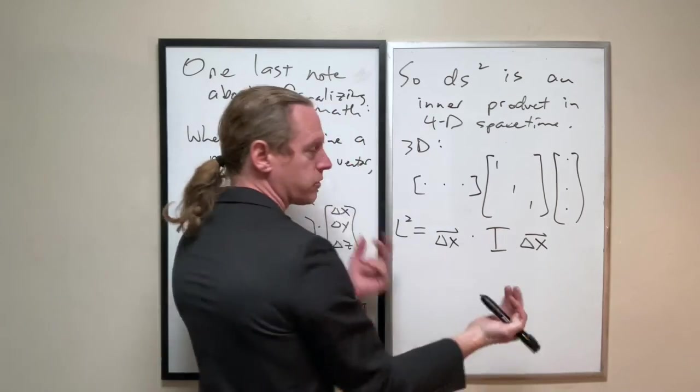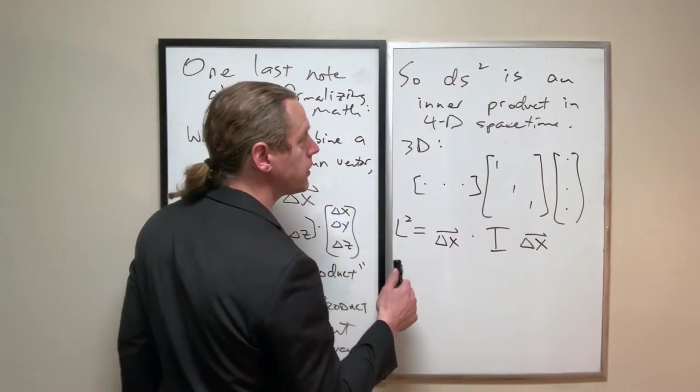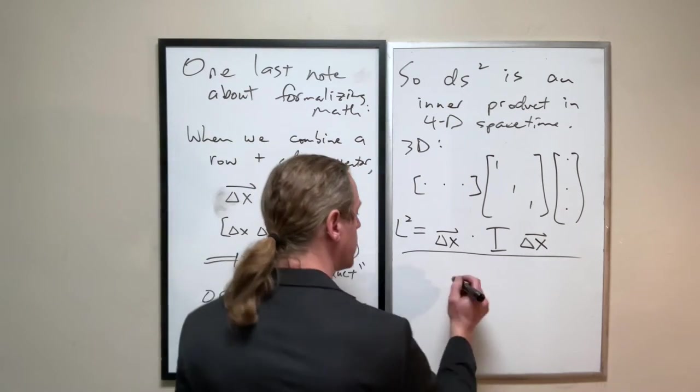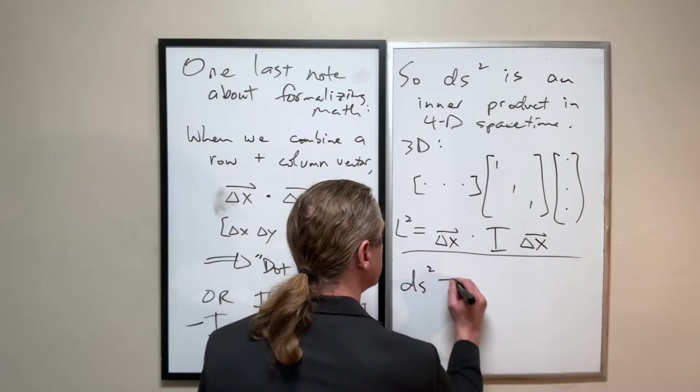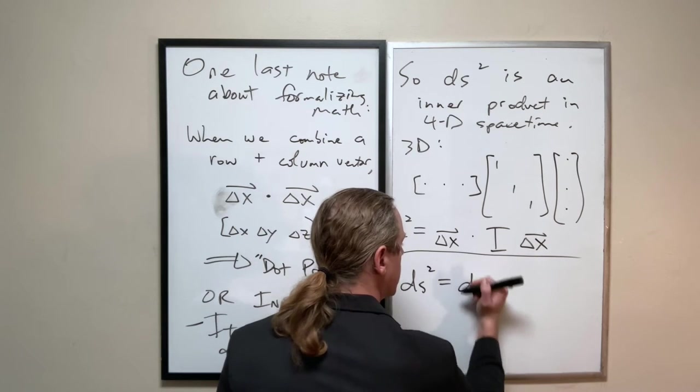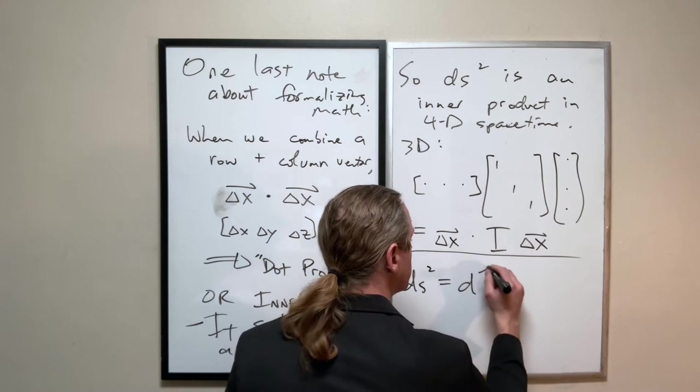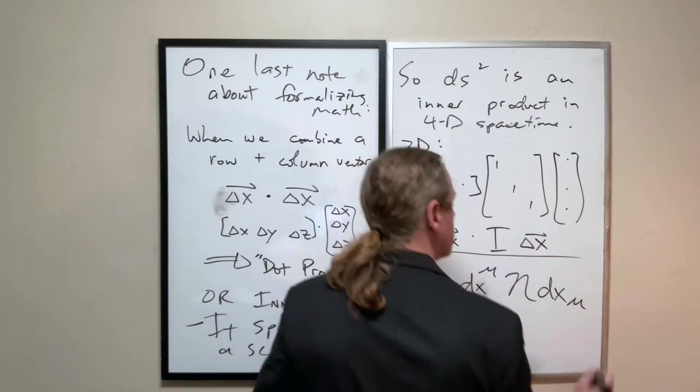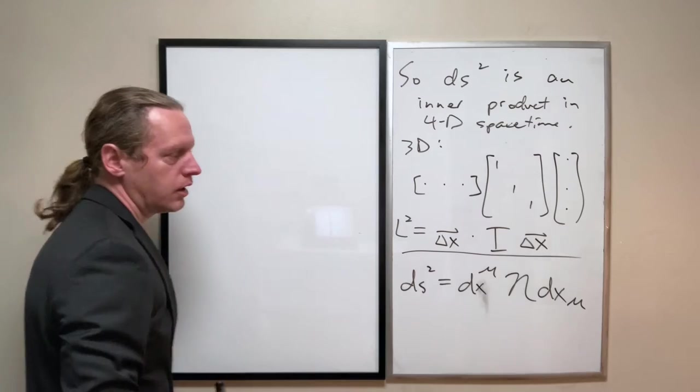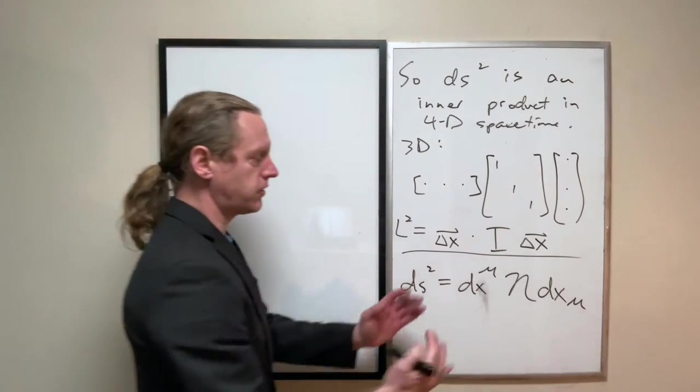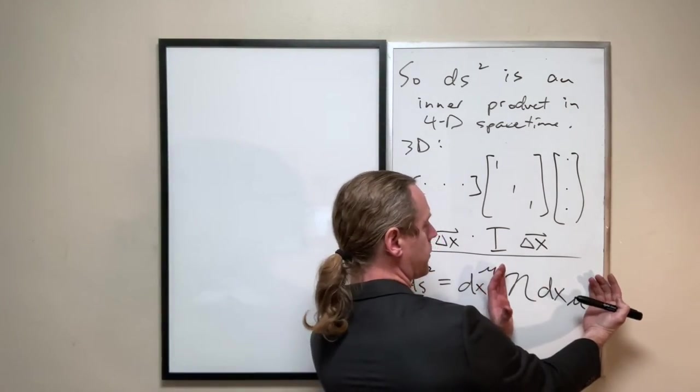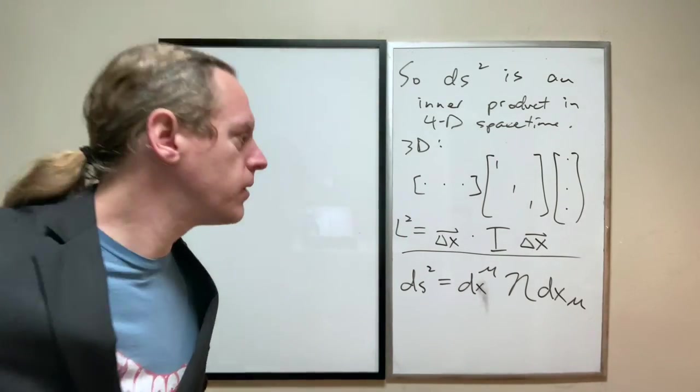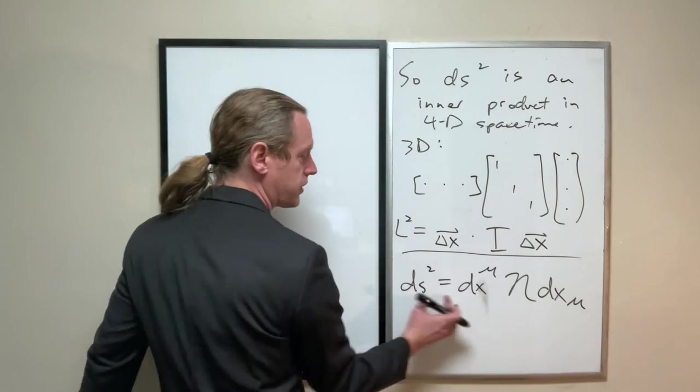In 4D space, it looks very similar, except now the way we write that is ds squared equals dx mu upper, eta, dx mu lower. Okay, so this really is just an inner product though. It's this guy, which is still a column vector times a row vector, so we still have a scalar output here.